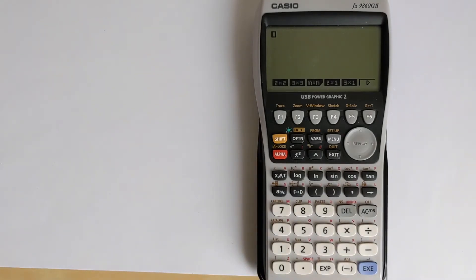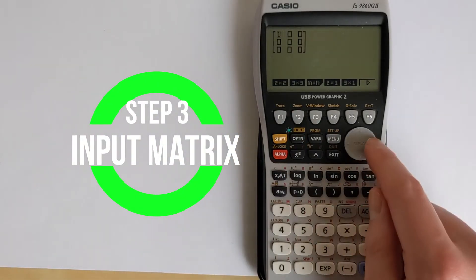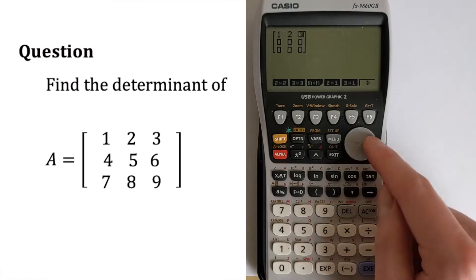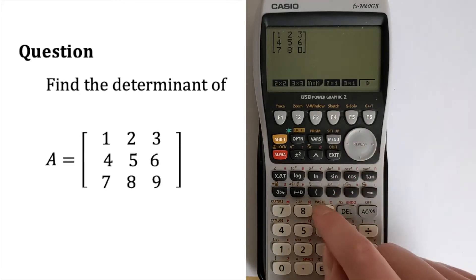Now, we want to choose a 3 by 3 matrix because that's what the question's got. And then we'll enter the data just with the arrow keys and the numbers. So then we've got 4, 5, 6, and then 7, 8, 9.